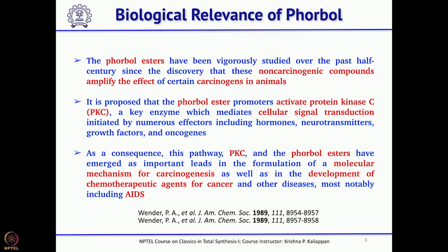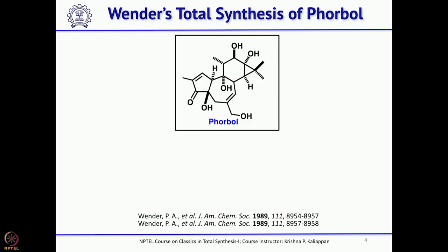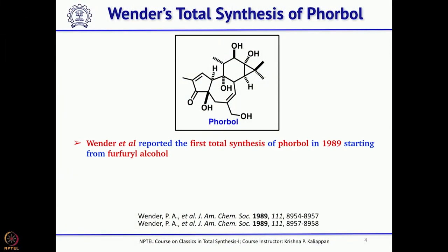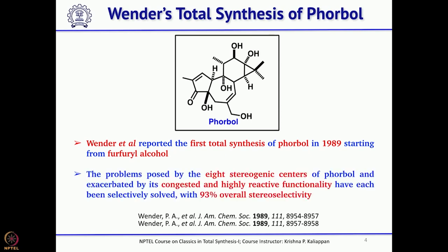Phorbol has an excellent biological activity profile and particularly helped in the development of many chemotherapeutic agents for cancer and other diseases like AIDS. I will not go into the biological profile of phorbol esters; rather, I will talk more about Wender's total synthesis, retrosynthesis, and how he constructed this interesting tetracyclic compound with so many chiral centers. The synthesis started from a commercially available simple starting material called furfural alcohol.